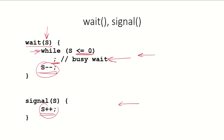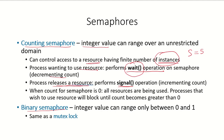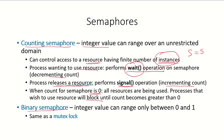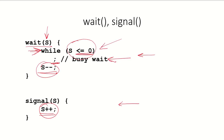Once a process has used the resource and releases it, it performs a signal operation — simply incrementing the semaphore by 1 — to indicate the resource is now available. When the count of the semaphore is 0, all resources are in use, and any process wishing to use that resource will block, looping in the while loop until the count becomes greater than 0. As soon as the count becomes greater than 0, the process exits the while loop and uses the resource.